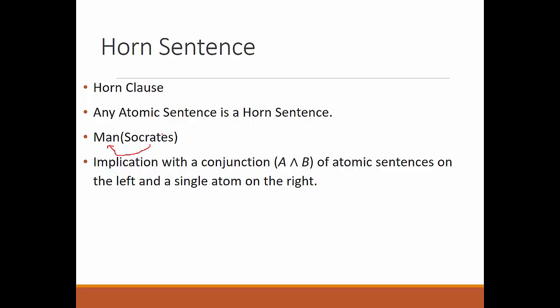Another category of horn sentences is a conjunction of atomic sentences on the left and a single atomic sentence on the right. So we have sentences A, B, all the way up to X, and they imply something — all of them are atomic sentences.